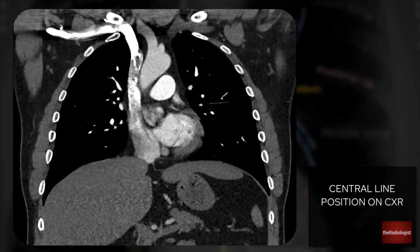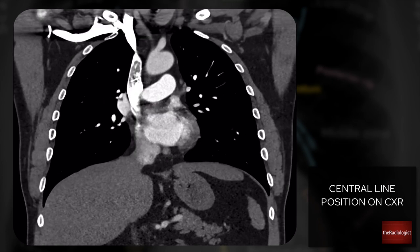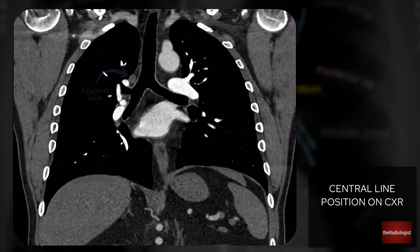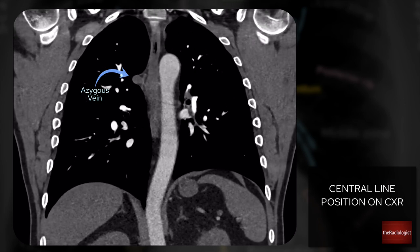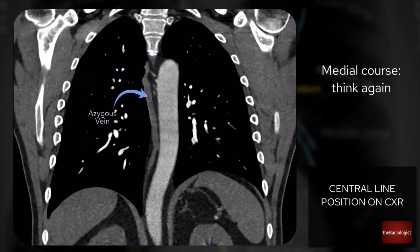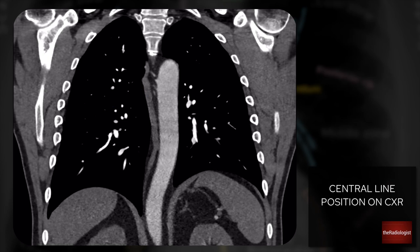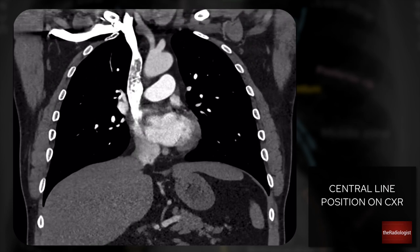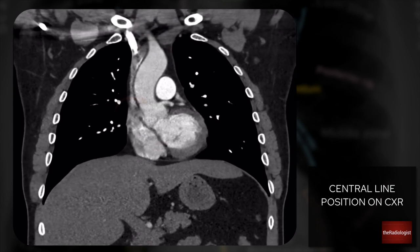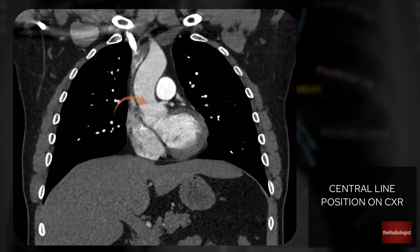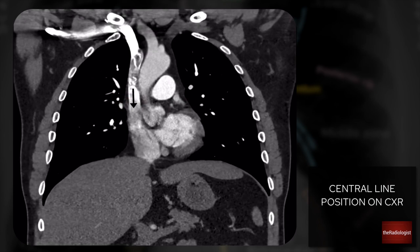Where don't we want the line? First, the azygos vein, which runs up the posterior mediastinum and drains into the SVC. On CT we can see it as a small circle just above the right main bronchus, heading medially towards the posterior mediastinum. If the line courses medially after what seemed a normal course, it could be in the azygos vein — that would be a malpositioned catheter. The second place to avoid is within an artery. If the line enters via the subclavian artery by mistake, it will end up in the aorta, heading more medially towards the aortic root rather than taking the expected vertical course on the right side of the mediastinum.